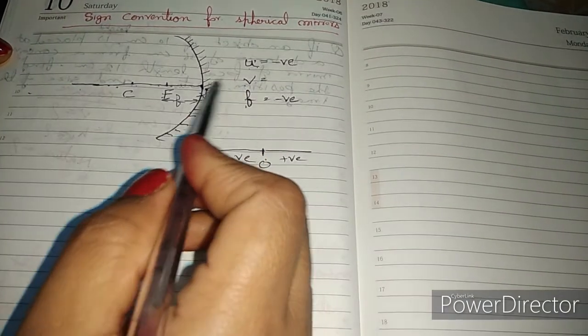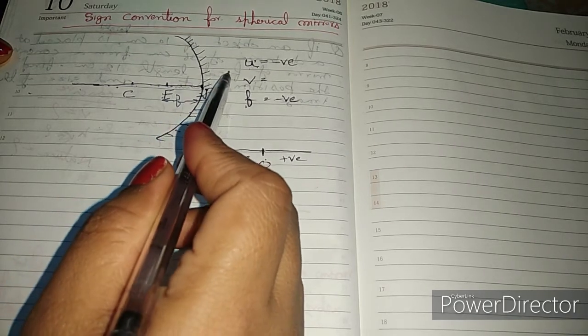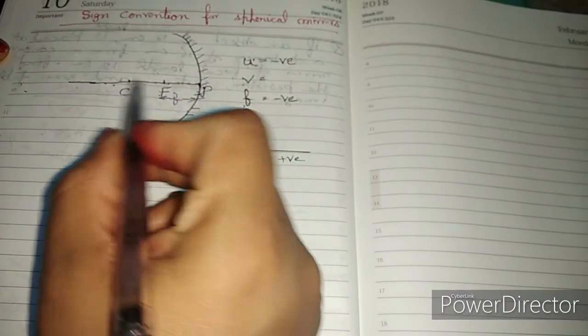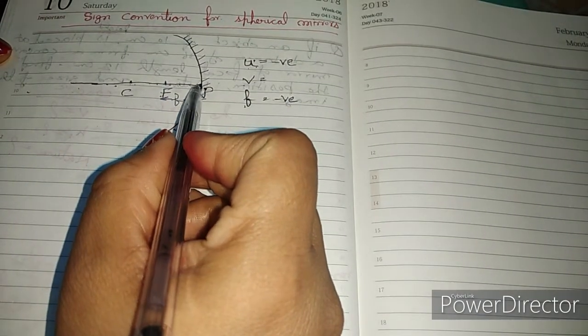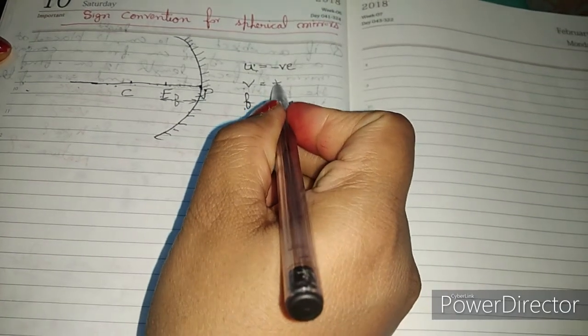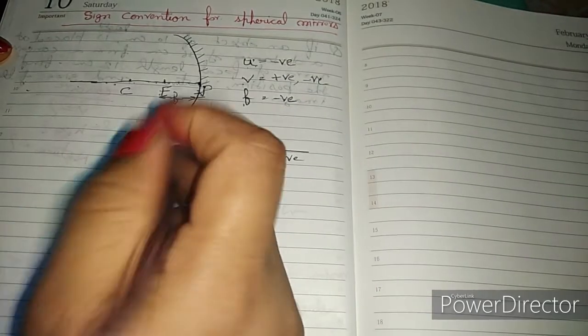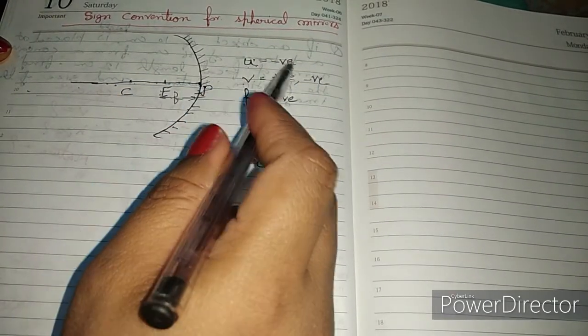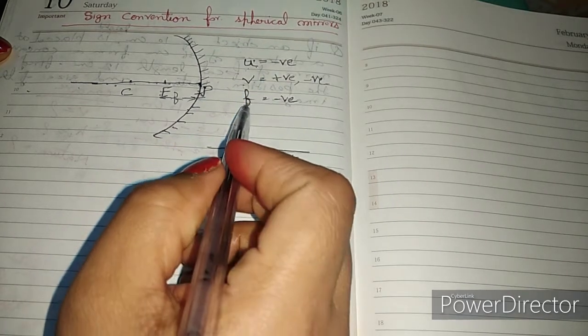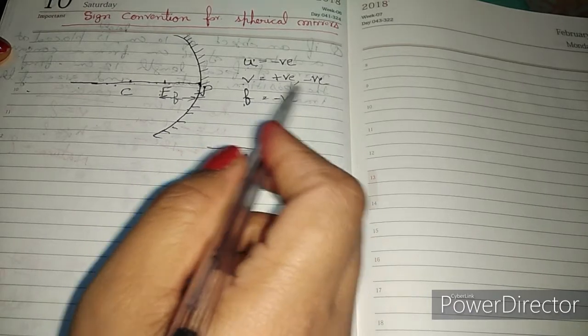And V has 6 cases. In 6 cases, in one case between pole and focus the image is virtual, erect, and in other cases the image is real and inverted. V can be positive and negative depending on the case where the object is.